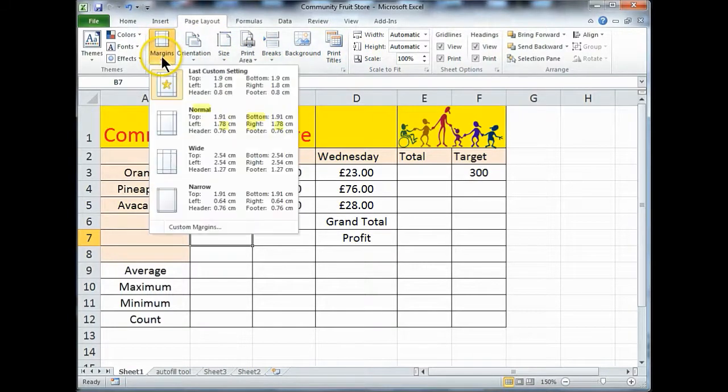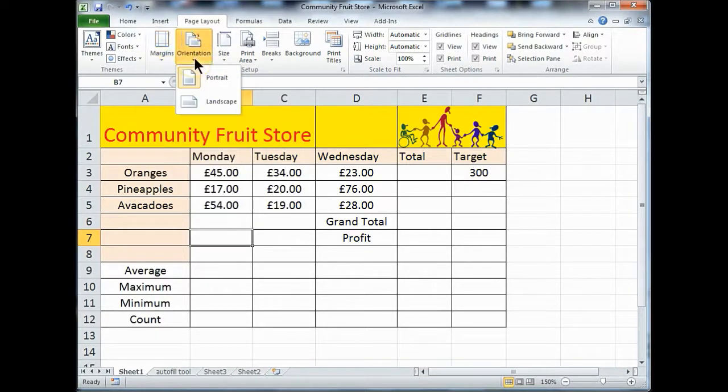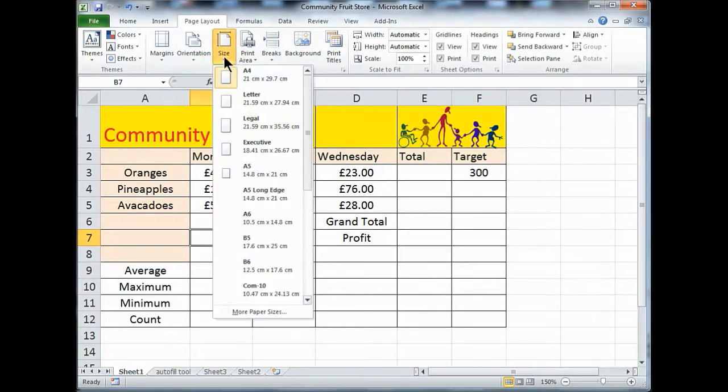Head over to page layout and you will see some very useful buttons there. You've got your margins, you can adjust the margins around your paper. You've got your orientation, do you want it portrait, landscape, you've got the size, what's the size of paper that you are going to print this to.